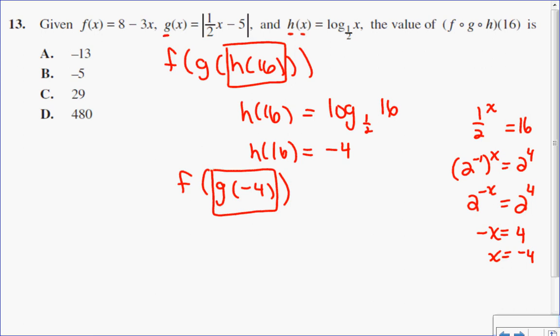g tells me I'm talking about this function. Negative 4 tells me I'm going to replace the x value with negative 4. So let's do what g of negative 4 is. It's going to be the absolute value of one half of x minus 5.